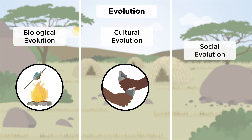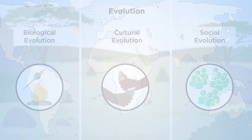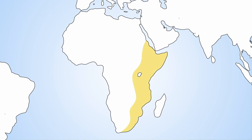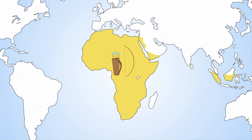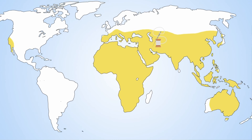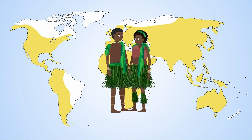And finally, social evolution has filled our households with language and our communities with social institutions. Combined, these three modes of evolution facilitated the spread of humanity from its origins to around the globe.